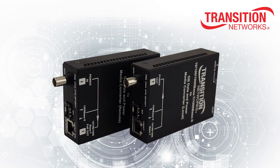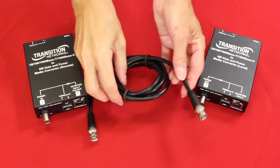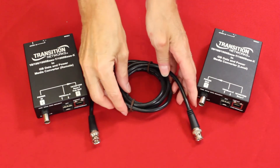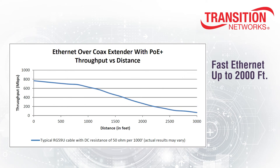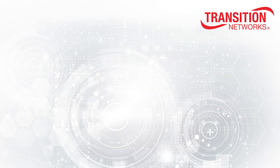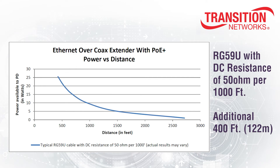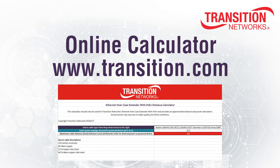Overall performance of the Ethernet over coax extender with PoE+ exceeds most competitive products. The exact power and distance performance is dependent on cable type, quality, and desired PoE output levels. Fast Ethernet speeds can be achieved up to 2000 feet, and near gigabit Ethernet speeds can be achieved in excess of 1000 feet. For typical RG59U coax cable with DC resistance of 50 ohms per 1000 feet, full PoE+ power can be achieved up to an additional 400 feet or 122 meters. An online calculator is available at www.transition.com to help determine performance using various cable types.